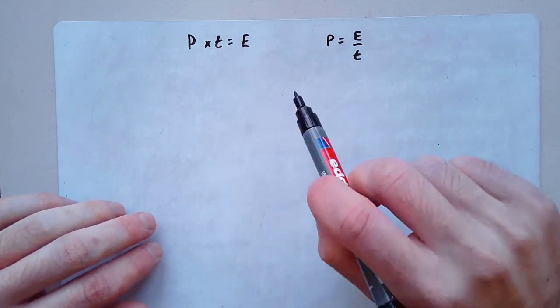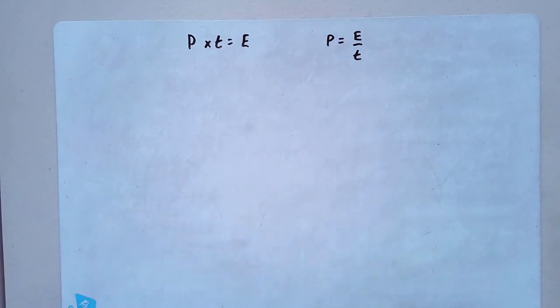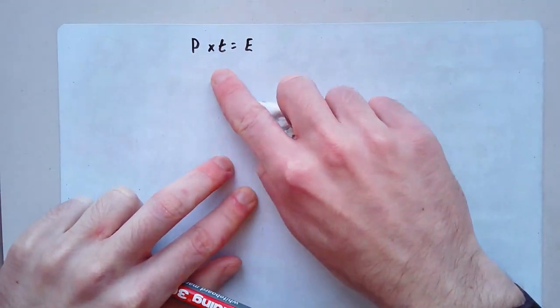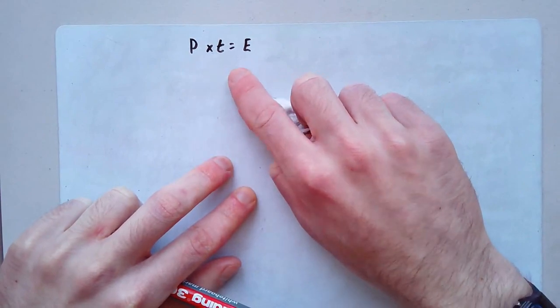The reason why we have different forms of the equation is because it depends on the question that we're asked, how we use that equation. Me personally, what I like to do is I like to memorize one form of the equation. In this case, P times t equals E.